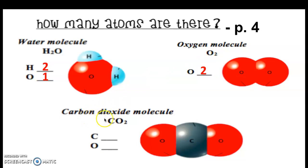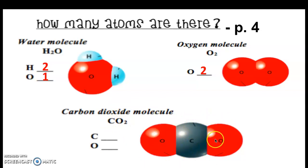Our next example is carbon dioxide, CO2. This one, we do not have a number with the carbon. Anytime that we do not have a subscript present, it's understood that there's just one of them — there's only that one C present. That would be drawn out like this. We have our carbon in the middle and then we have two oxygen atoms. So for this example, we have one carbon, and our subscript 2 applies to the oxygen, so that's two oxygens.